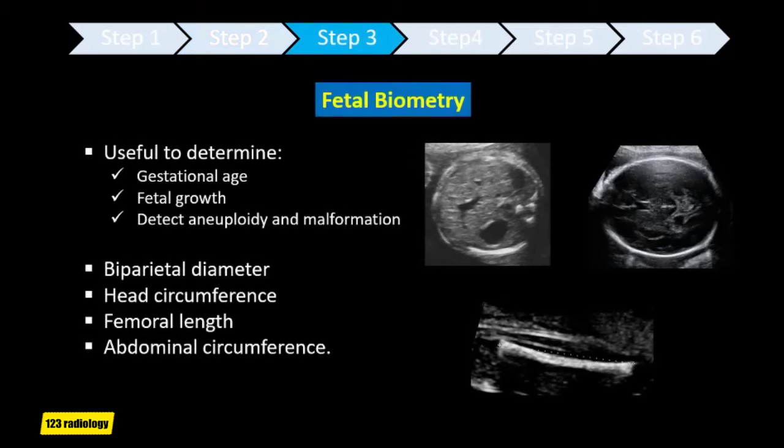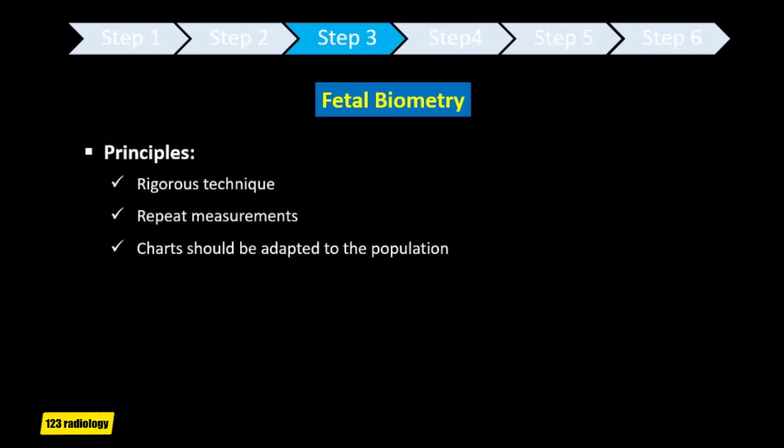The third step is fetal biometry. Fetal biometry is useful to determine gestational age, fetal growth, and to detect some aneuploidy and malformation. There are four mandatory fetal measurements: biparietal diameter, head circumference, femoral length, and abdominal circumference. These measurements must be done with rigorous technique. You have to repeat measurements, and your charts should be adapted to the population.